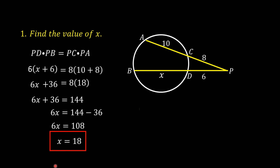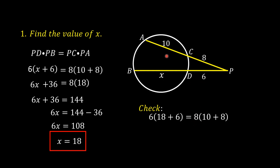Let us check. 6 times (18 plus 6) is equal to 8 times (10 plus 8). So we have 6 times 24 is equal to 8 times 18. 6 times 24 is 144, and 8 times 18 is also 144. Since the left side equals the right side, the value of X is really equal to 18.